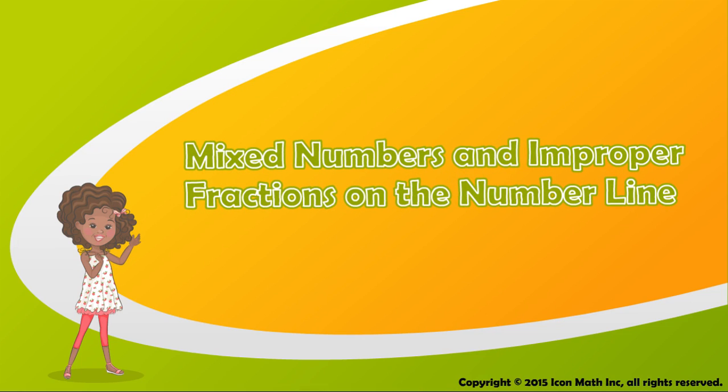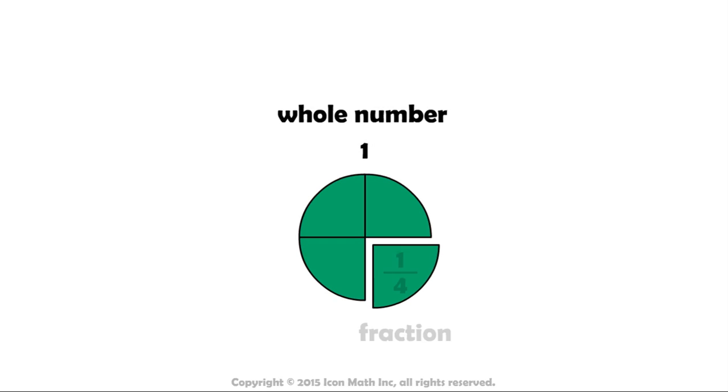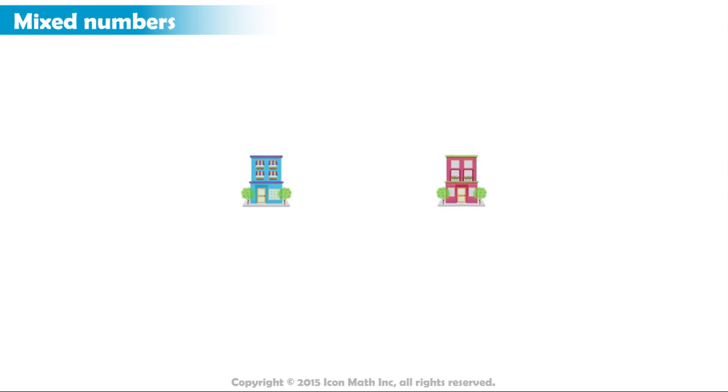Mixed numbers and improper fractions on the number line. We know that a fraction represents parts of a whole. Suppose we have two buildings. The distance between them is three-fourths of a mile.